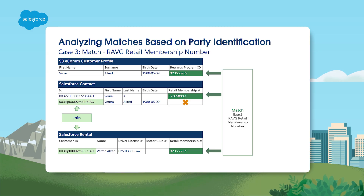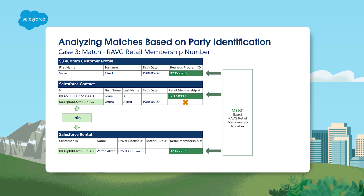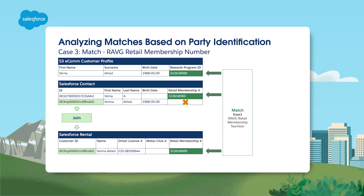Let's analyze a match based on party identification. Here there is an exact match based on the rewards program ID and retail membership numbers. You can see three party identification records with the same RAVG retail membership values in the identification number. The values in party are the same values you see for individual ID based upon the unified individual page. This illustrates matching records with the same party identification type, name, and number to create one unified profile.